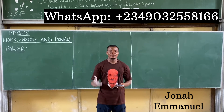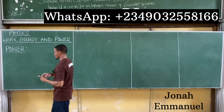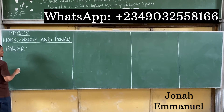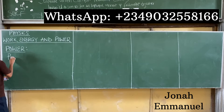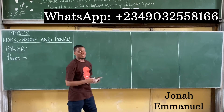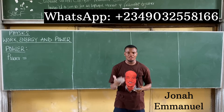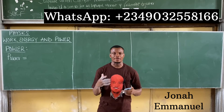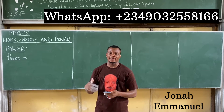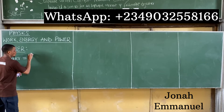We can also say power is the rate at which work is done. When it comes to a mathematical expression, since rate means something is changing with respect to time, power is equal to work done over time.